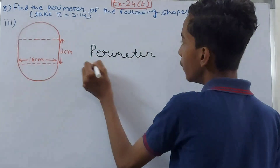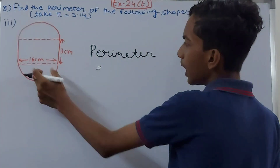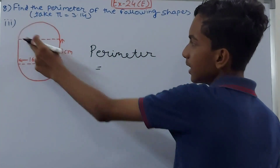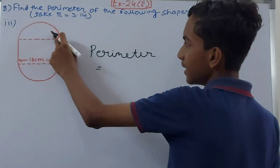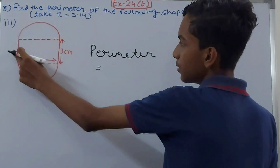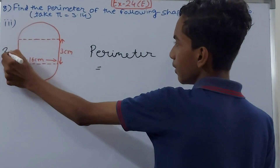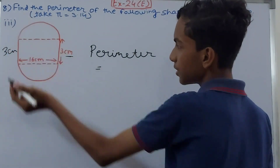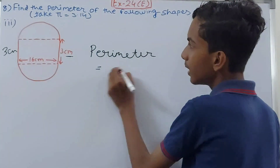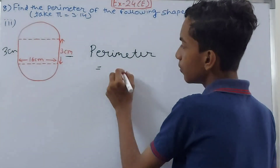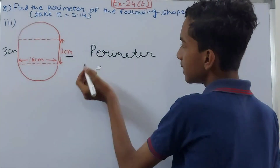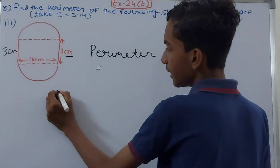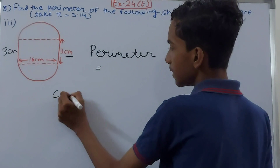Moving to the next part: this figure has two semicircles and two straight sides. The perimeter includes the two curved circumferences and the two straight sides of 3 centimeters each. We'll find the circumference of each semicircle first.